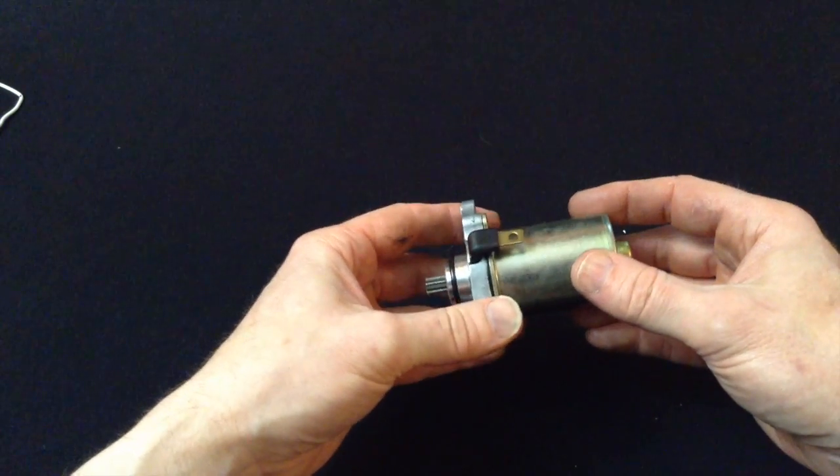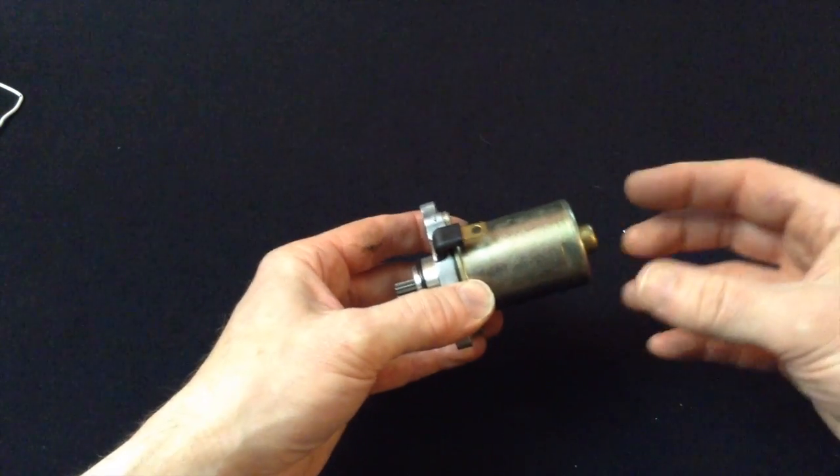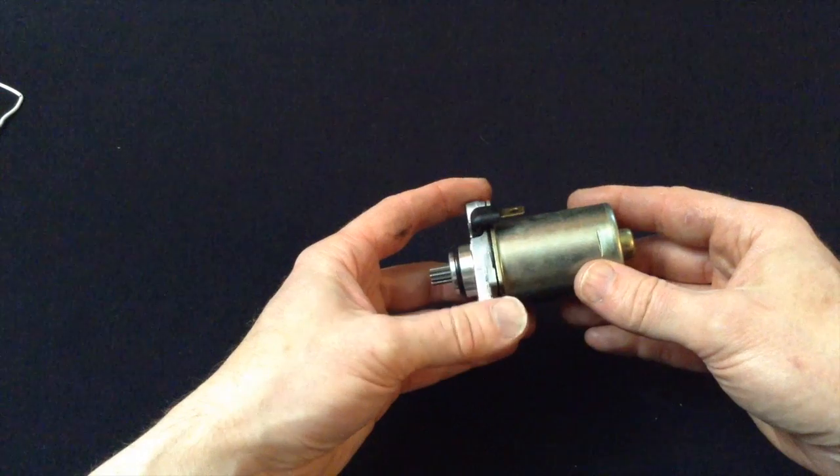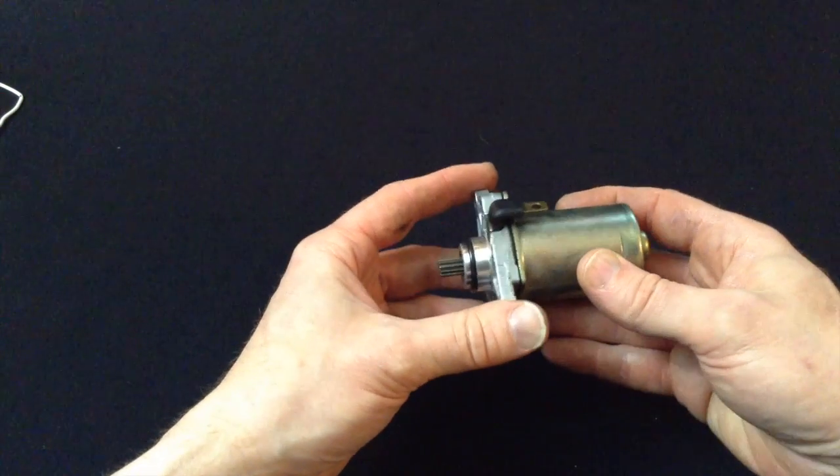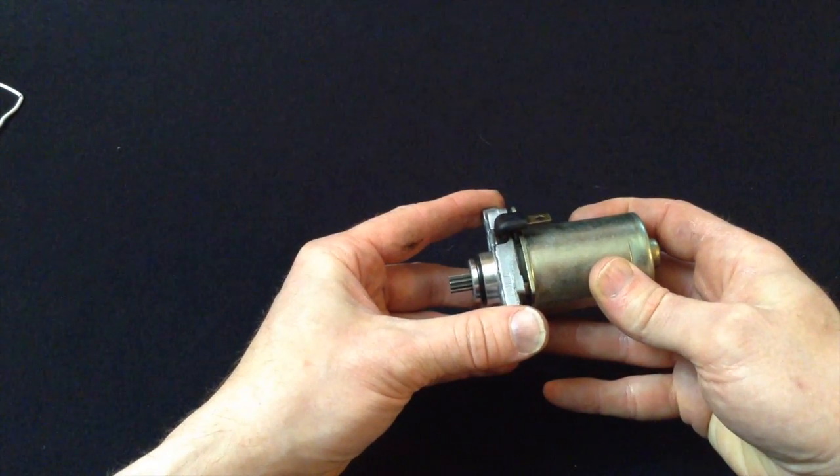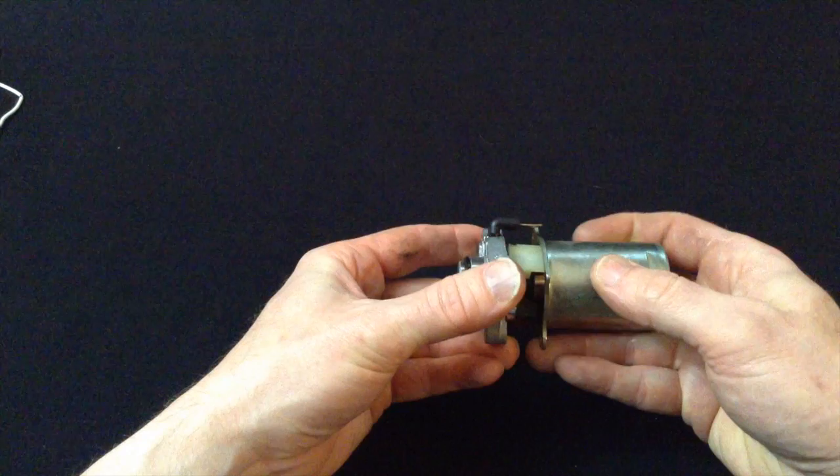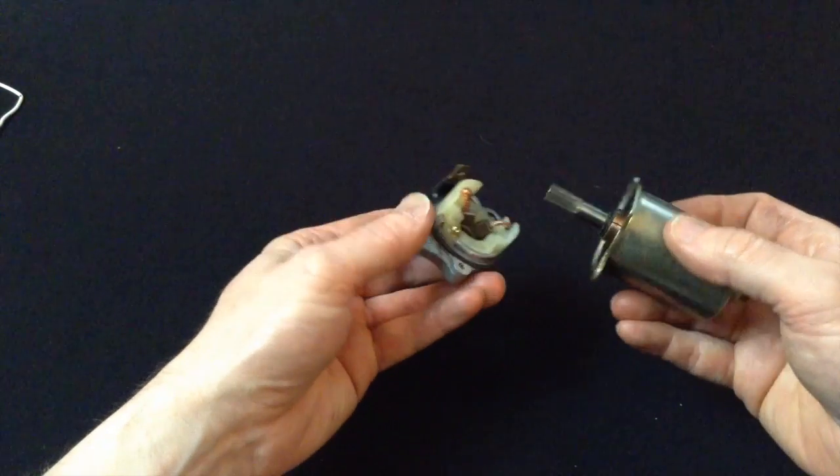I'm going to pull it apart. Often when you pull these things apart, you'll hear a spring sound, which is part of the commutator assembly that we'll be looking at, pulling apart. Bang, there it goes. Which makes them a nightmare to put back together.